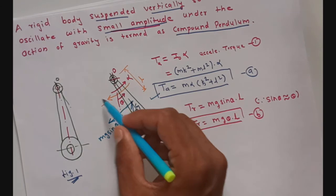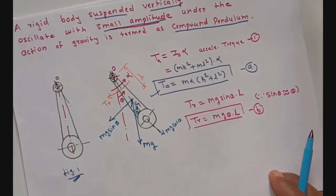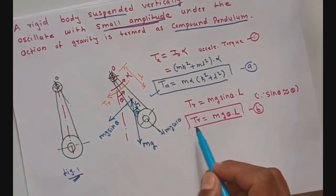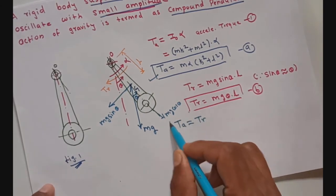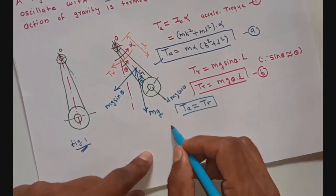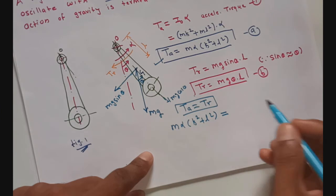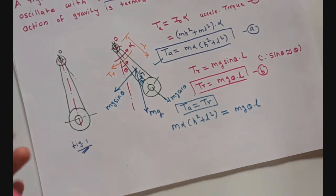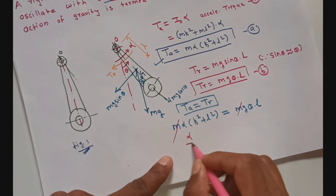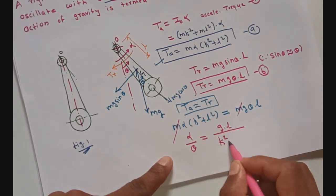The accelerating torque acts in the counterclockwise direction and the restoring torque acts in the clockwise direction. The body will come to rest when the accelerating torque is balanced by the restoring torque. So for static equilibrium of the compound pendulum, accelerating torque equals restoring torque. Equating equations A and B: M·alpha·(K² + L²) = Mg·theta·L. Cancelling M from both sides, we get alpha/theta = GL/(K² + L²).